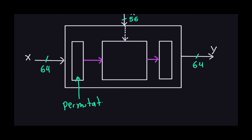The permutation takes this block of 64 bits and rearranges them into another 64-bit block. After that permutation is done, the result comes into this other black box.